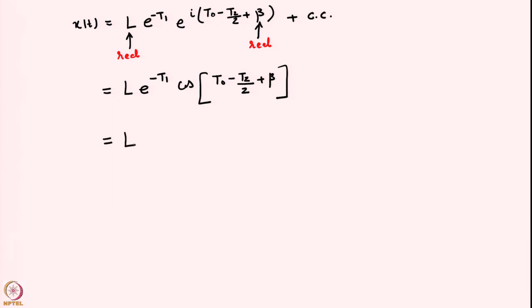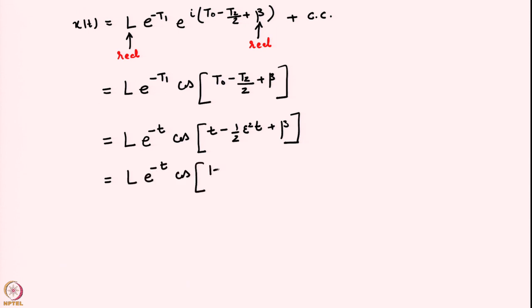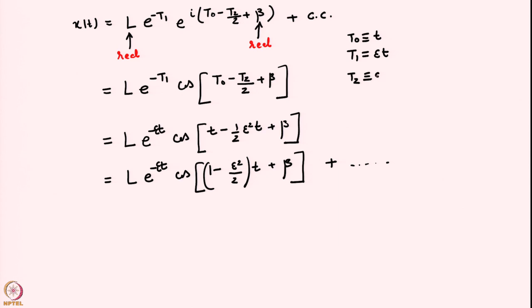The sine part cancels out. Going back from the multiple-scale variables T0, T1, T2 to the original time variable — recalling T0 = t, T1 = εt, T2 = ε²t — this gives L · e^(−εt) · cos(t − ε²t/2 + β), which equals L · e^(−εt) · cos((1 − ε²/2)t + β). This is our final answer, up to higher-order terms.